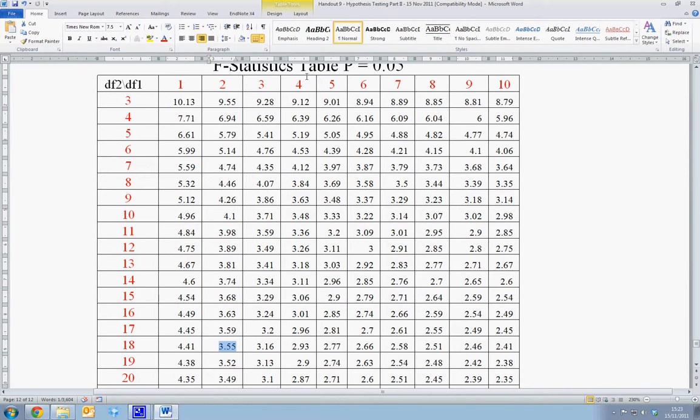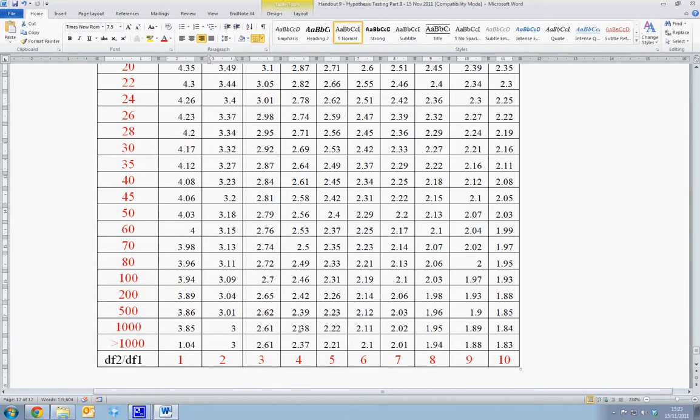If we have four constraints and n minus k is 1000, we have an F-critical value of 2.38. For values greater than 1000, we can observe critical values as such.